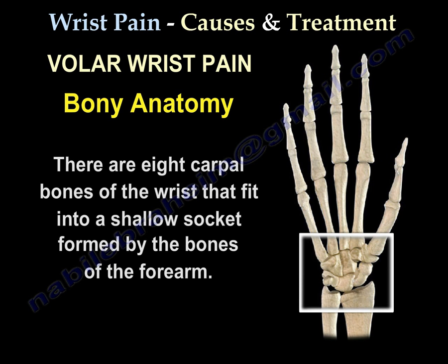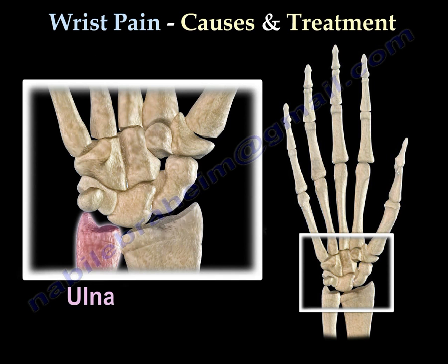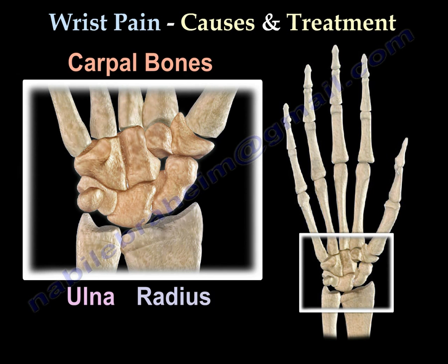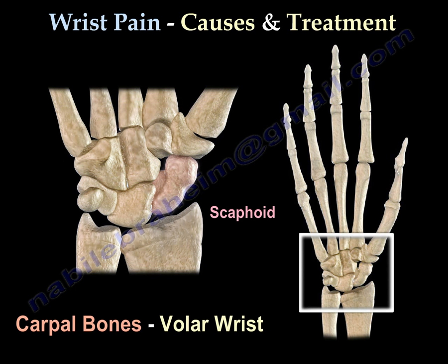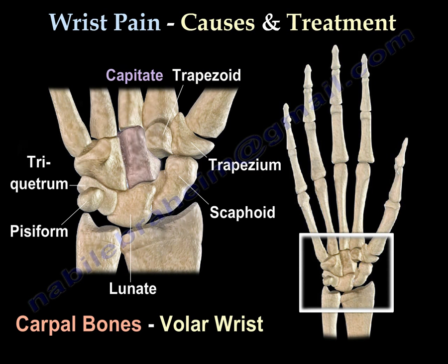There are eight carpal bones of the wrist that fit into the shallow socket formed by the bones of the forearm — the ulna and the radius. The carpal bones are: the scaphoid, the lunate, the triquetrum, the pisiform, the trapezium, the trapezoid, the capitate, and the hamate.